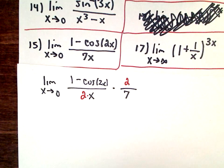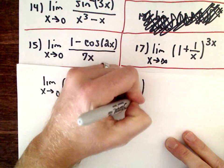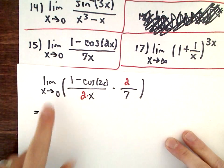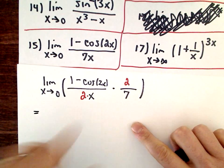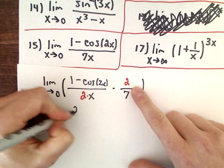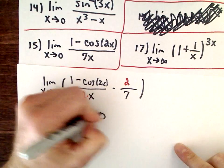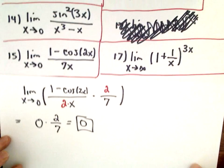Now we're done. If we take the limit as x approaches zero, this 1 minus cosine 2x over 2x, that's going to be zero, multiplied by 2 over 7. We get zero, and we're all finished.